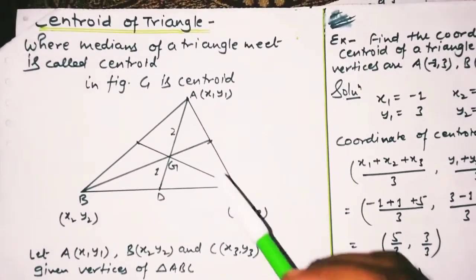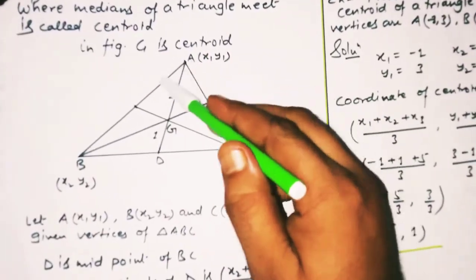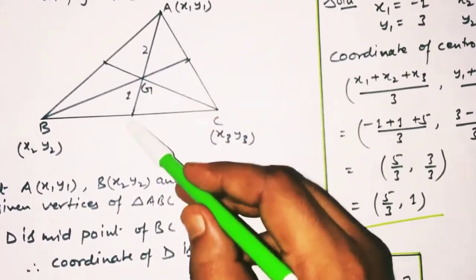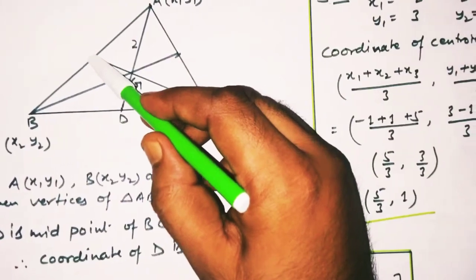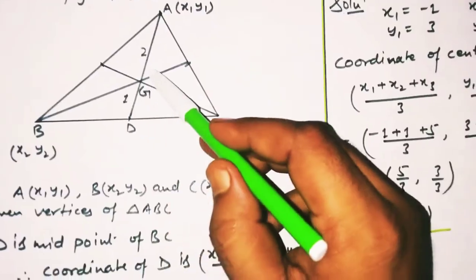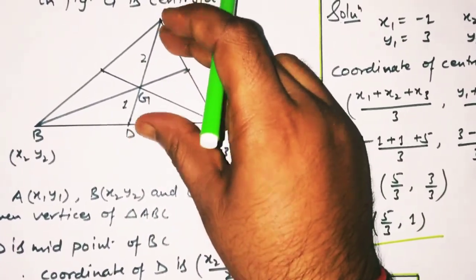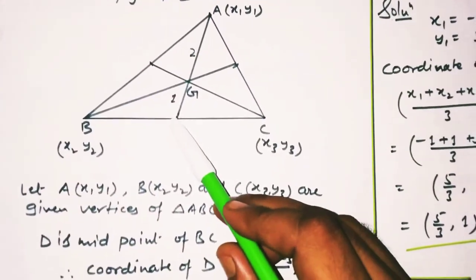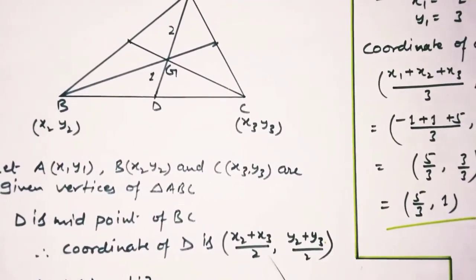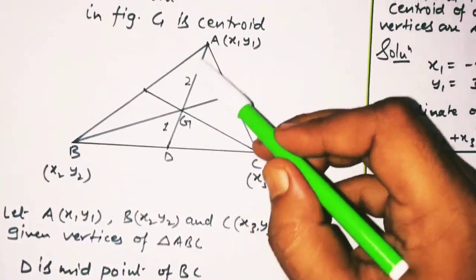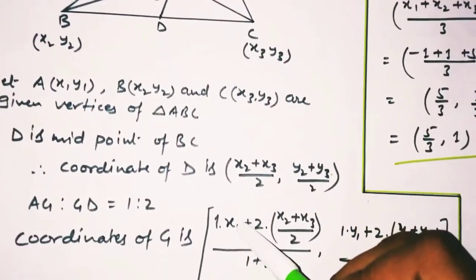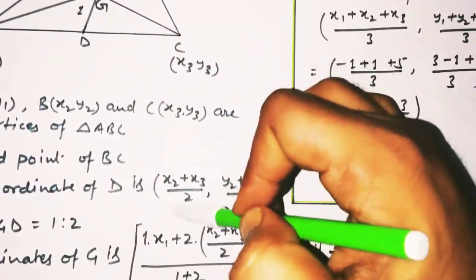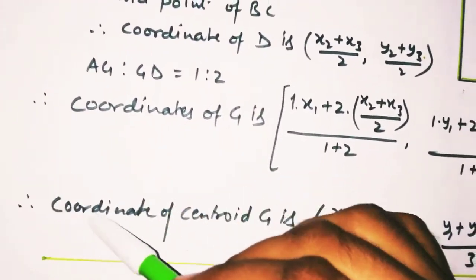Last formula ki baat karte hain jo ki centroid nikalne ka formula hoga triangle ka. Centroid actually hota kya hai — jaise aapke paas koi triangle hai, aur uske vertices se opposite side ke midpoint ko jab hum milate hain to woh median ho jata hai. Jis point pe medians cut hoti hain wahi centroid ho jata hai. Ek median ki baat karein to centroid 2:1 ke ratio mein divide hota hai. D midpoint hai BC ka, to D ka coordinate = ((x2+x3)/2, (y2+y3)/2). A ka coordinate x1, y1 malum hai, M1:M2 = 2:1 — section formula mein value rakh dete hain. To centroid ka direct formula hota hai: ((x1+x2+x3)/3, (y1+y2+y3)/3).